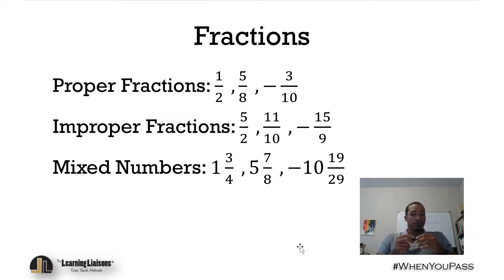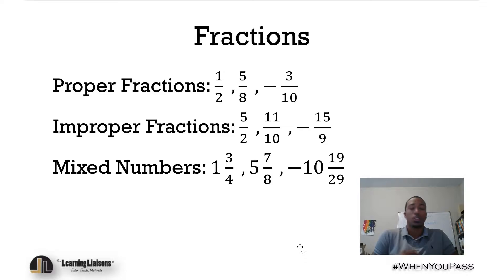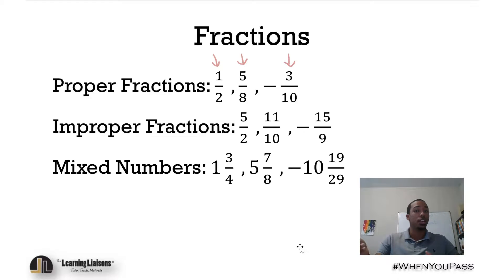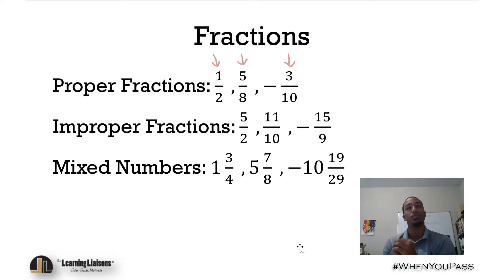Proper fractions — what are they? Well, proper fractions are always less than one. Their value is always less than one. Things like one-half, five over eight, negative three over ten — they could be positive or negative, but they're always less than one, or between negative one and positive one, since we have the negative there.